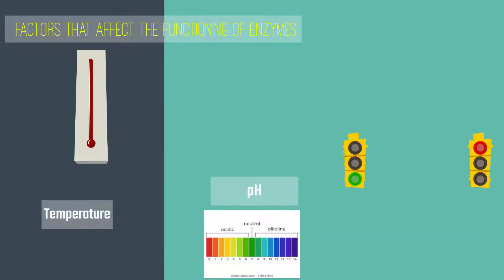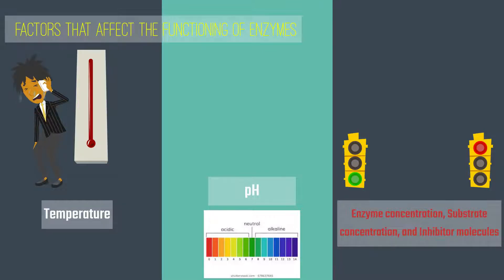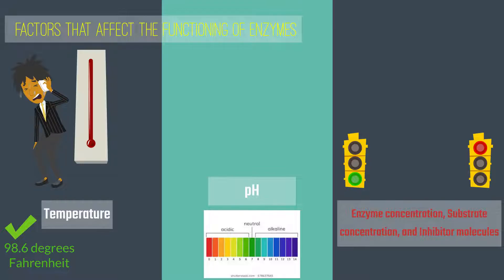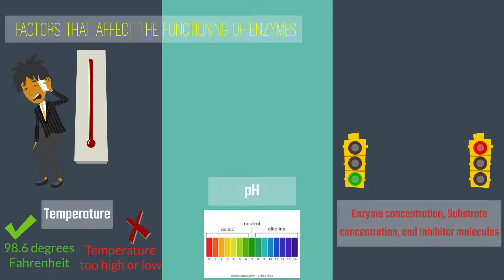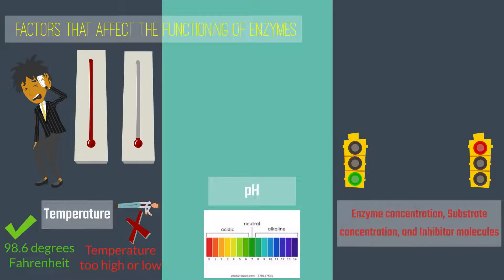There are some factors that affect the functioning of enzymes, like temperature, pH, and activators and inhibitors. Most enzymes function best at 98 degrees Fahrenheit because the enzymes retain their structure at that temperature, allowing them to break down complex molecules more efficiently. If the temperature goes too high, it can cause the enzyme to denature, which changes the shape and causes the enzyme to not function properly. Enzymes also work slowly at low temperatures because the substrate molecules have less energy and move into the active site at a much slower rate.